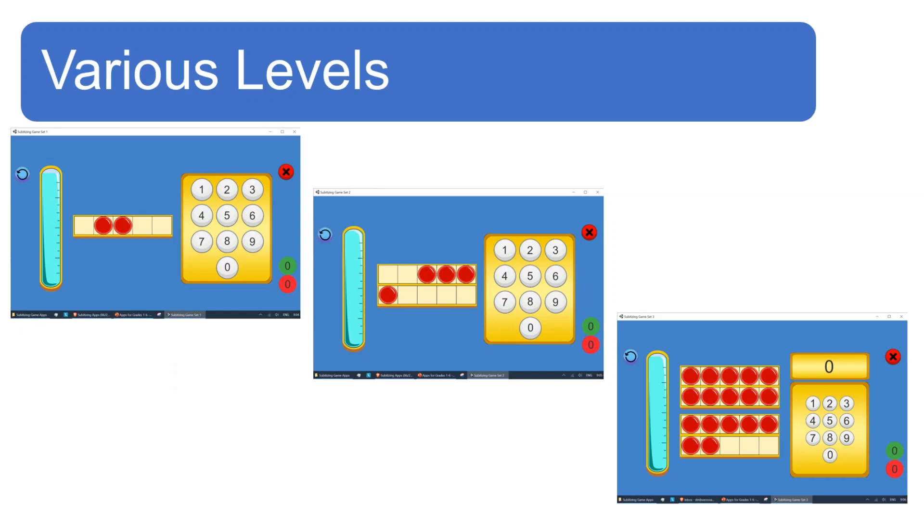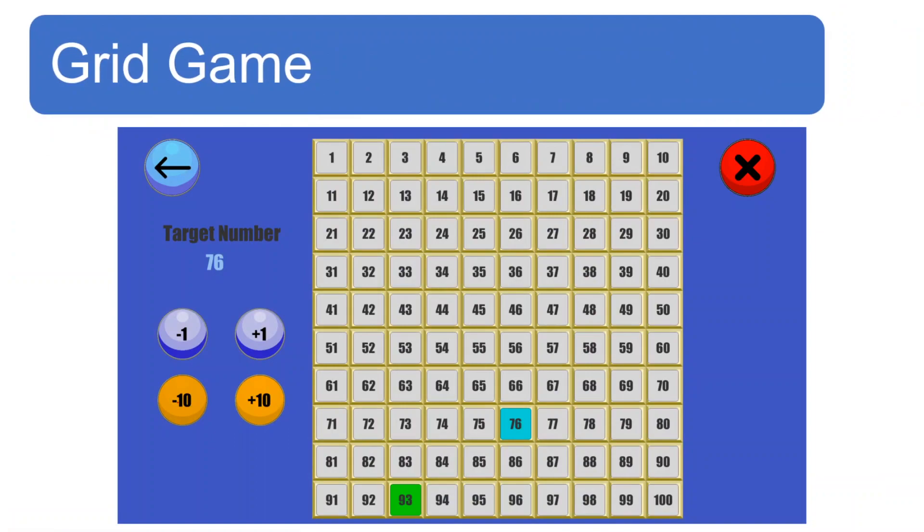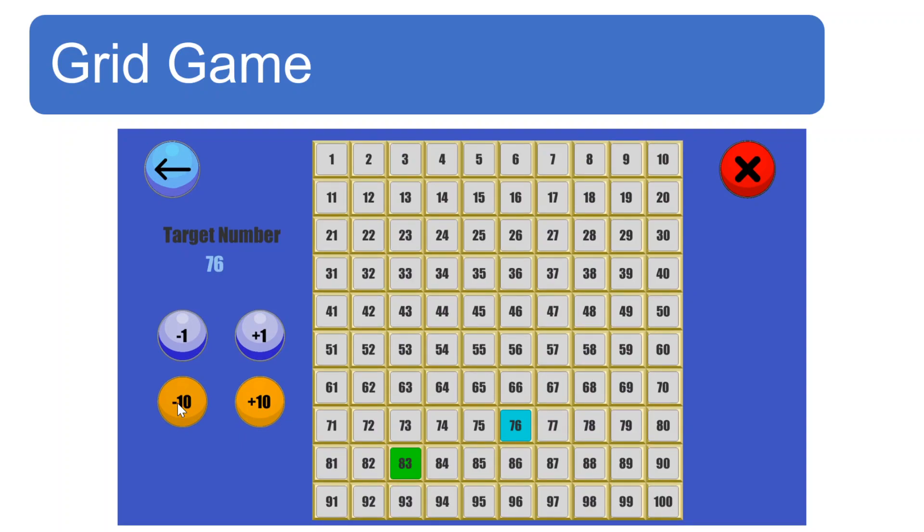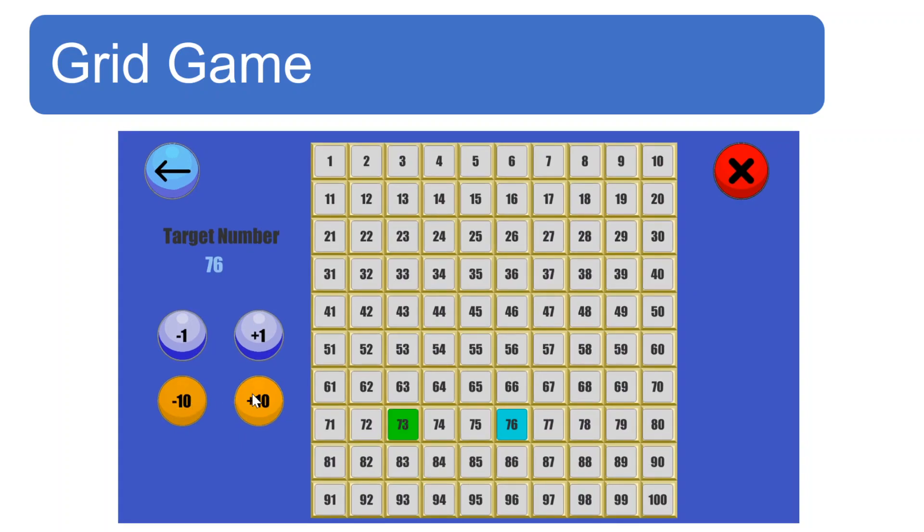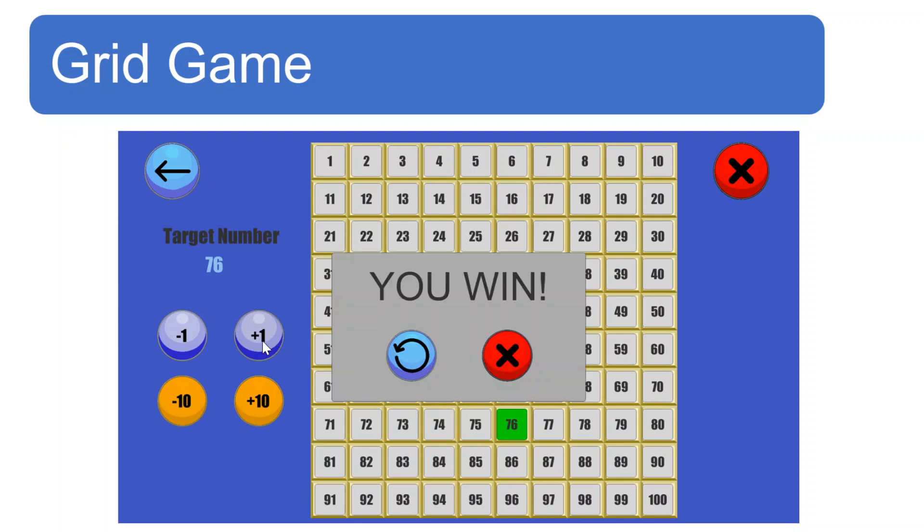Ang pangalawang app na ipapakita ko sa inyo ay ang grid view. Dito may target number tayo. Ang kailangan gawin ay i-click ang mga button para makaabot sa target. Nasa 93 na tayo ngayon. Paano ba tayo aabot sa 76? Siyempre, pwede namang paulit-ulit tayong mag-minus 1 hanggang umabot sa 76. Pero napakatagal nun. Mas mabilis kung minus 10. Tapos minus 10 ulit. Tapos plus 1 hanggang umabot sa 76.